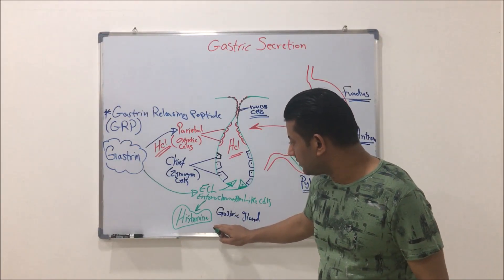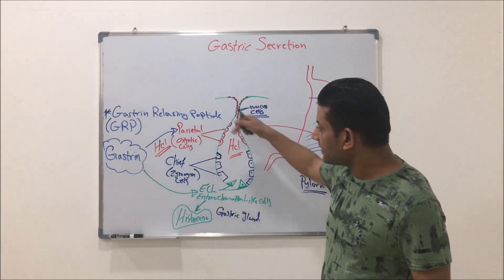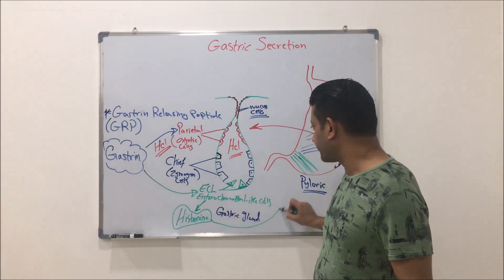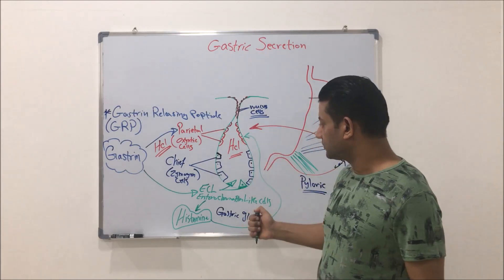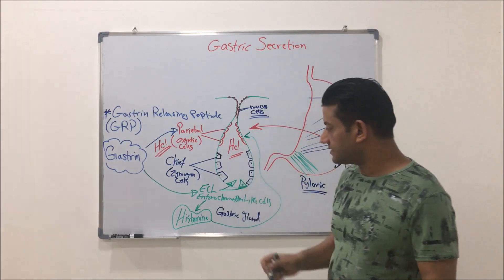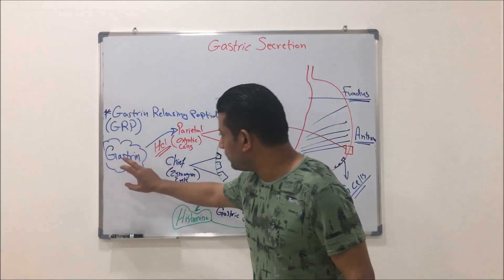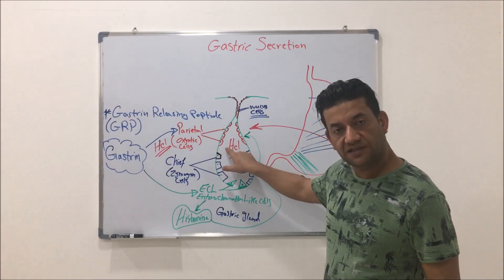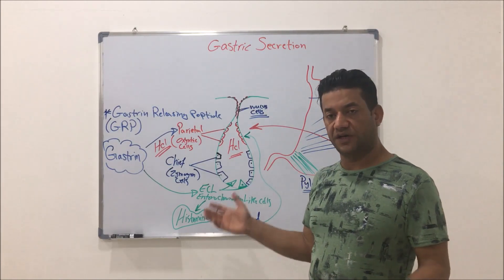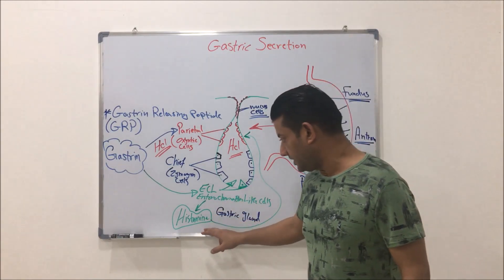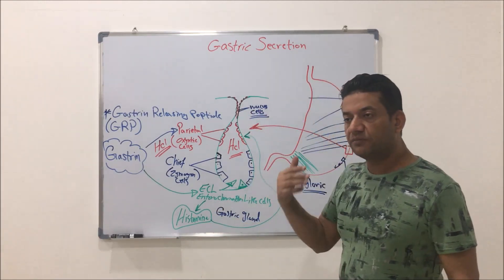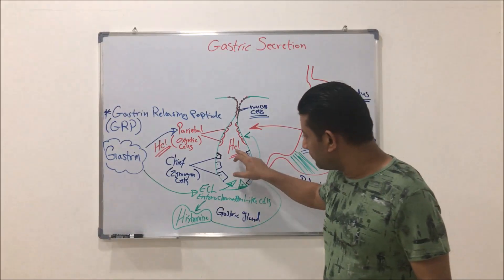Histamine itself will also target the parietal cells and cause them to secrete additional HCl. So, gastrin acts on parietal cells causing them to secrete HCl, and gastrin acts on enterochromaffin-like cells or ECL, causing them to secrete histamine. Histamine itself will act on parietal cells to increase the secretion of HCl.